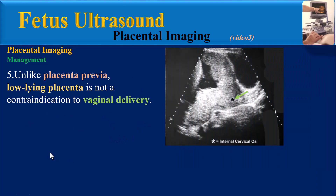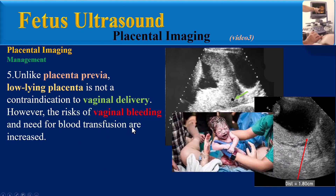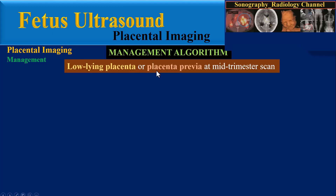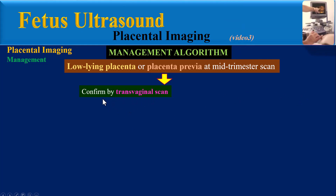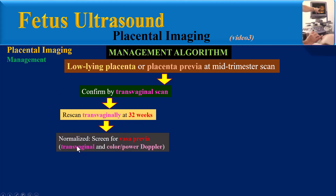Unlike placenta previa, low-lying placenta is not a contraindication to vaginal delivery; however, the risk of vaginal bleeding and need for blood transfusion are increased. A management algorithm can be helpful. If a low-lying placenta or placenta previa is diagnosed at mid-trimester scan, confirm by transvaginal scan, then re-scan transvaginally at 32 weeks gestation. If normalization is found at 32 weeks, a screen for vasa previa by transvaginal and color or power Doppler is mandatory.